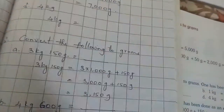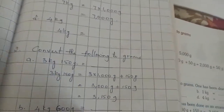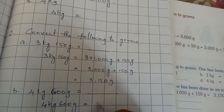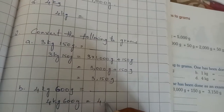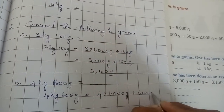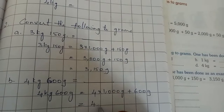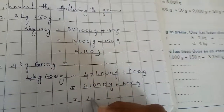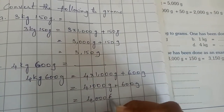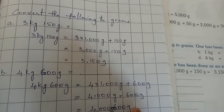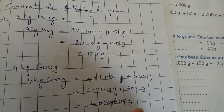I will explain the second one. What they have given: 4 kg 600 grams. We need to convert this into grams. 4 kg means 1 kg equals 1000 grams, so 4 into 1000 grams, plus 600 grams. 4 into 1000 means 4000 grams plus 600 grams equals 4600 grams.